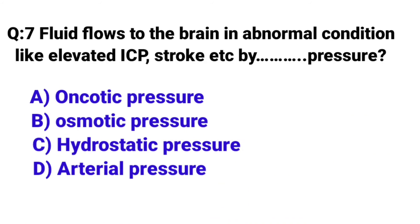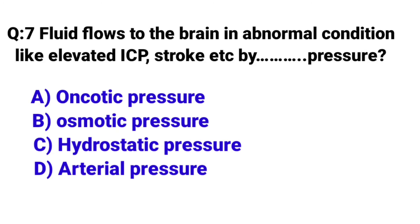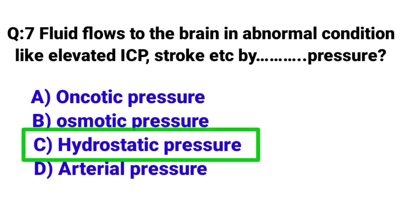Question Number 7: Fluid flows to the brain in abnormal conditions like elevated ICP, stroke, etc., by pressure. Correct answer is Option C: Hydrostatic pressure.